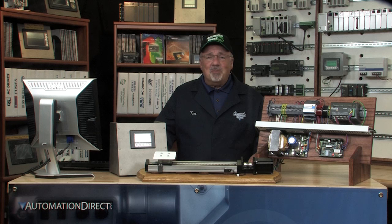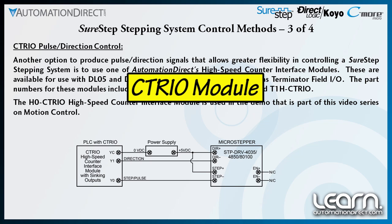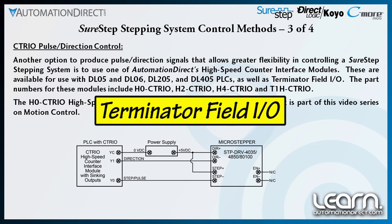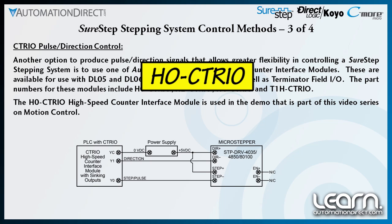The next control method can also provide pulse and directional signals to a SureStep stepping system. This is done by using one of AutomationDirect's high speed counter interface modules, commonly referred to as a C-TRIO module. The C-TRIO module is available for use with the DL05, DL06, DL205, and DL405 families of PLCs, as well as AutomationDirect's Terminator field IO. Using a C-TRIO module allows more flexibility and higher speeds over the built-in high speed pulse output feature. I have chosen to use the H0-C-TRIO high speed counter interface module installed in a DL05 PLC as the control method for my demonstration application.